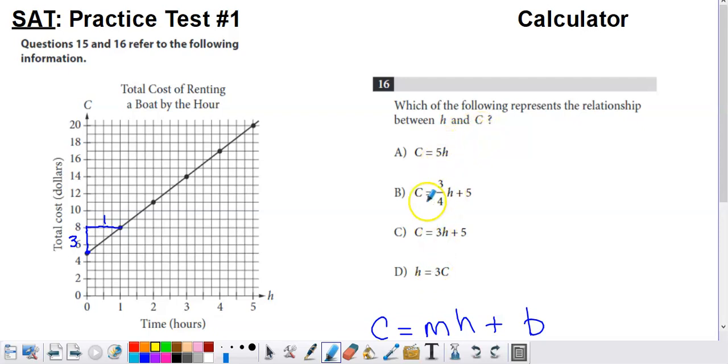If you look at these options, they are all equations. The equations, the first three at least, are in slope-intercept form with a little bit of a tweak. What we have is c taking on the role of y and h taking on the role of x.